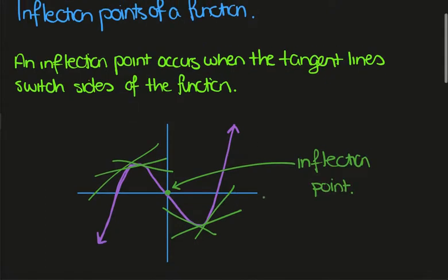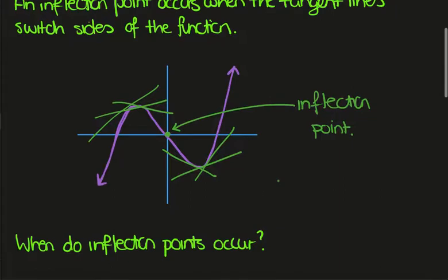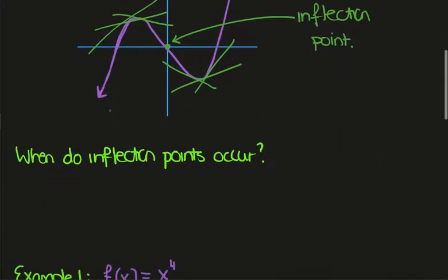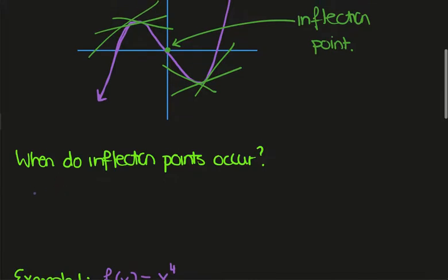A common interpretation of the inflection point is that the second derivative of the function vanishes. This actually turns out to be incorrect. What you actually need is that the second derivative changes sign about the inflection point. Let's look at what the distinction is between the second derivative changing sign about the point and the second derivative vanishing.